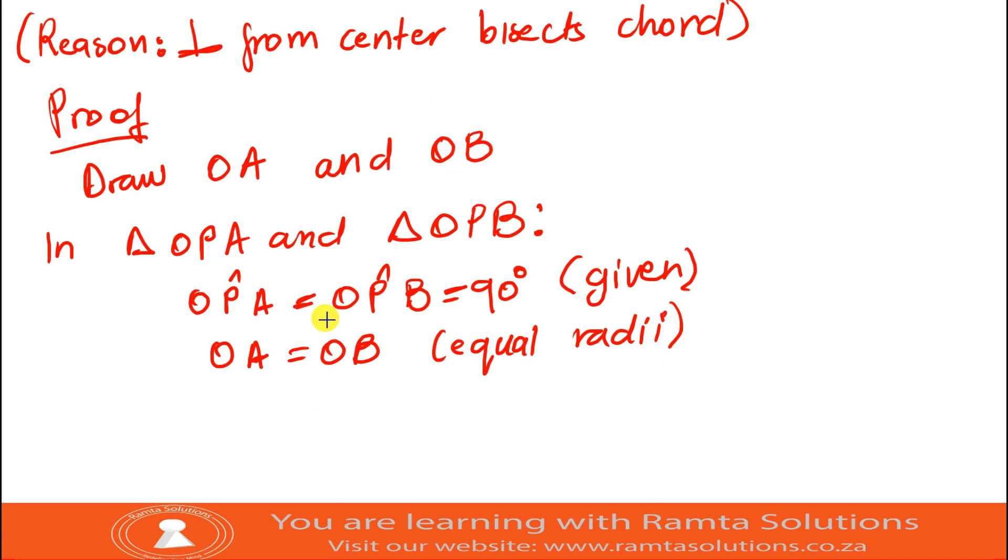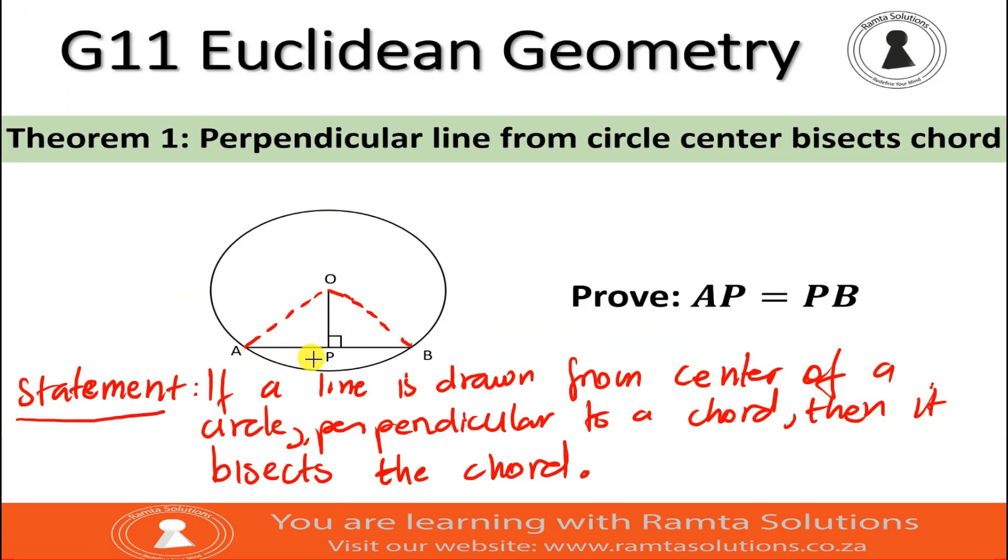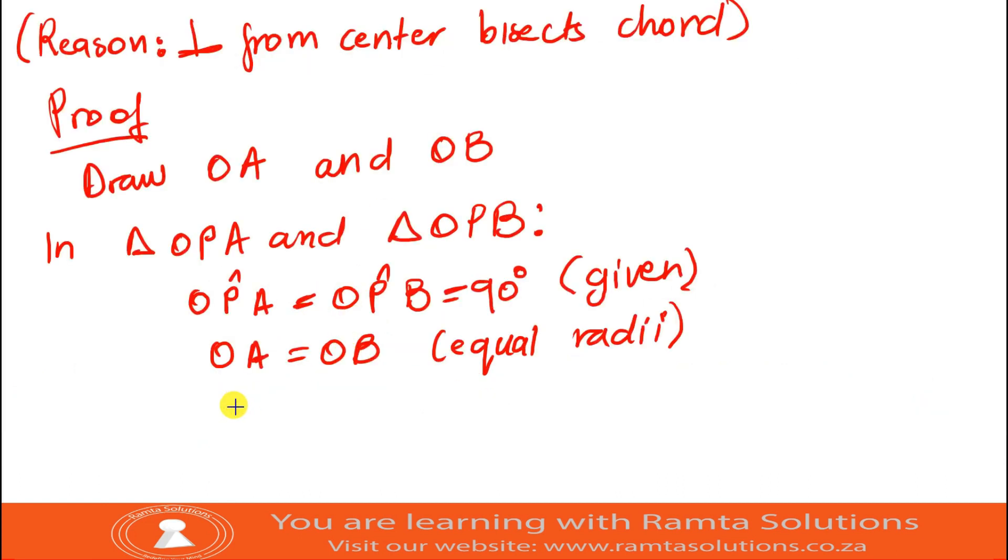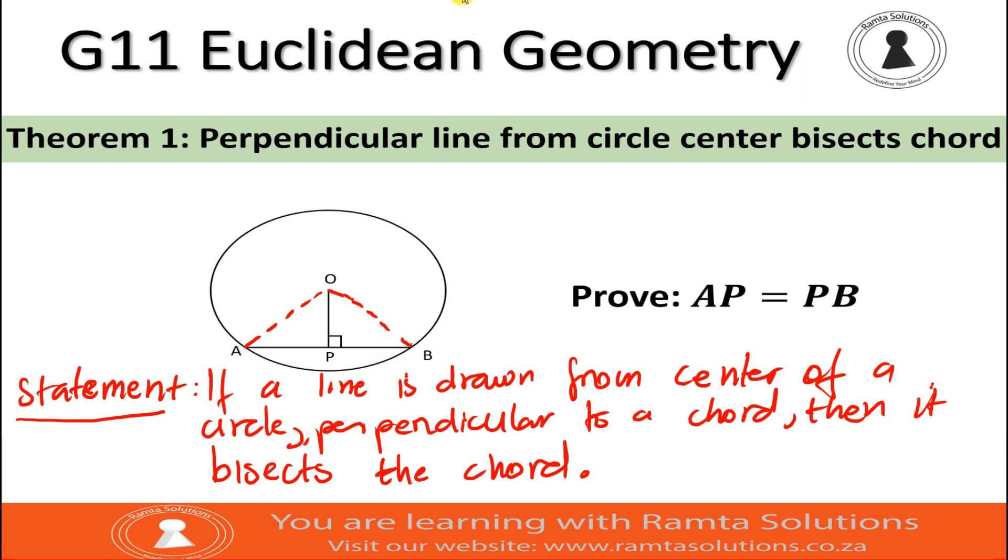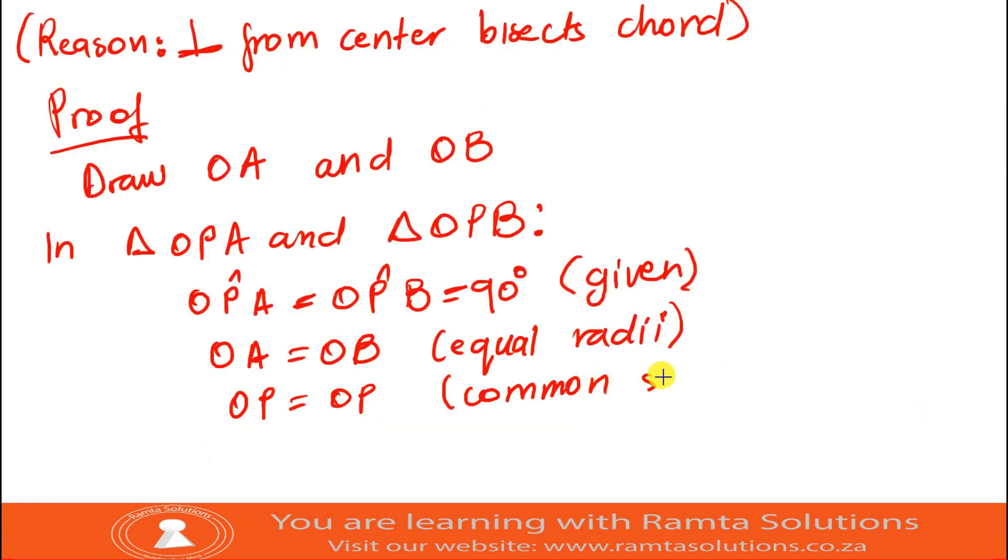Then, I want you to look at another side. What side is given that we know some information on? I think we know this side OP. So, we can therefore say OP equals OP. Why? It's a common side. Triangle OPA has side OP. Triangle OPB also has side OP. So, this is a common side.